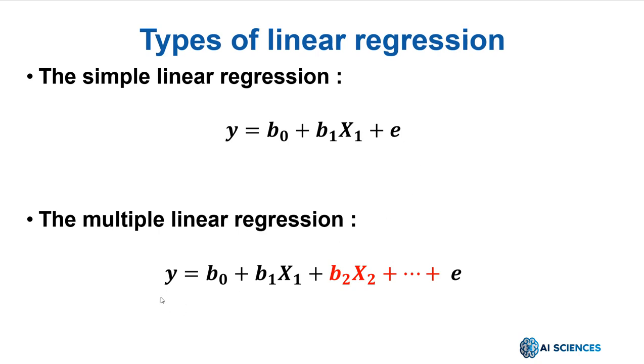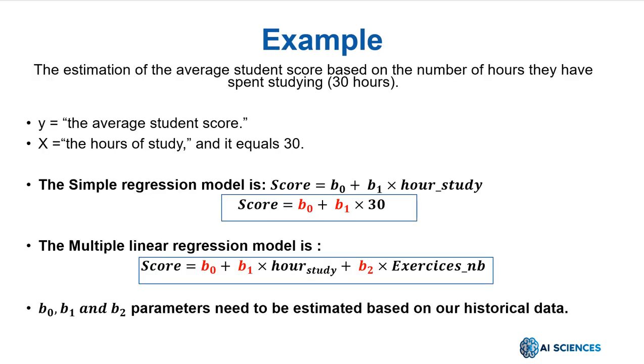In multiple linear regression, we use two or more independent variables to predict the value of a dependent variable. The difference between the two is the number of independent variables x: y equals b0 plus b1x1 plus b2x2 plus dot dot dot plus e. To keep this lesson simple and to help you understand the rest of the course, right now we will focus on the simple linear regression only. The same thing will be replicated in multiple linear regression. The only thing that will change is the number of x variables.